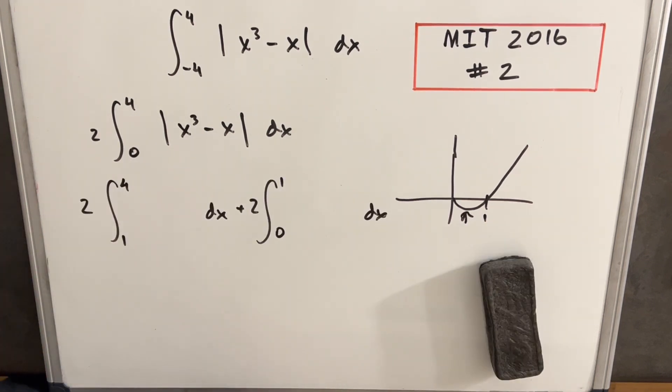Okay, so now in order to remove our absolute value sign, we can break this integral up in the two parts. We're going to evaluate from four to one and one to zero to cover the full four to zero.